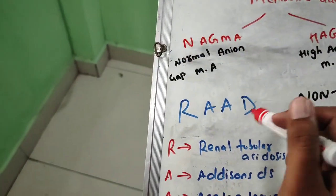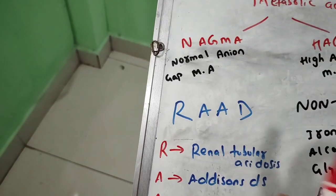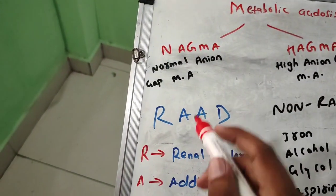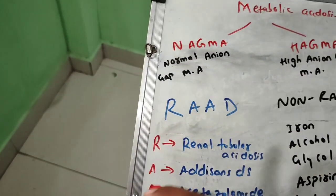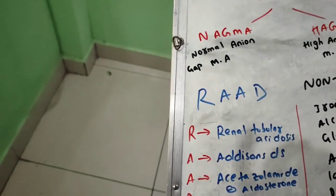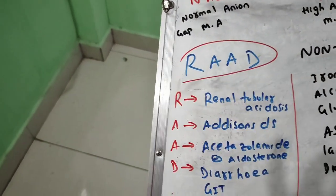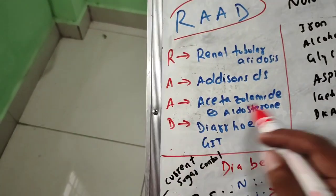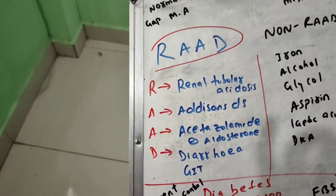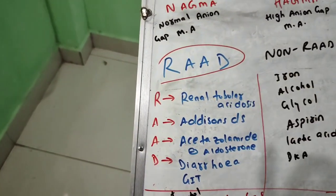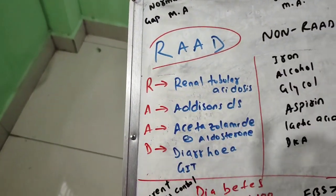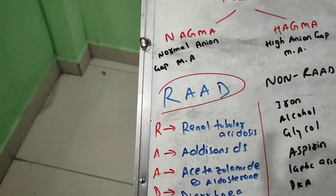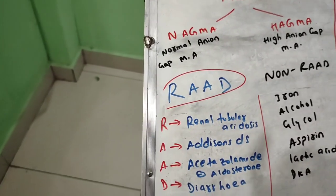Remember: NAGMA is 'ROD.' NAGMA means Normal Anion Gap Metabolic Acidosis. The mnemonic ROD stands for: R = Renal Tubular Acidosis, A = Addison's Disease, A = Acetazolamide and Aldosterone, D = Diarrhea and GIT-related problems. All of these belong to NAGMA.